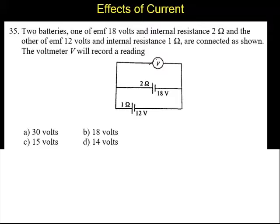Alternatives are 30 volts, 18 volts, 15 volts, and the last choice is 14 volts. To solve this problem, first we will find out how much current is passing through this network because the voltmeter current can flow like this only.